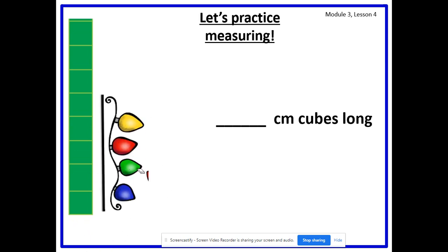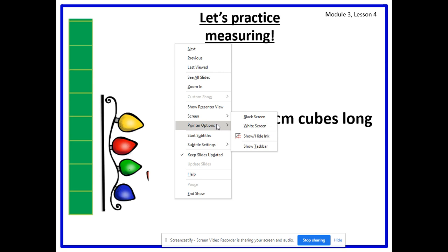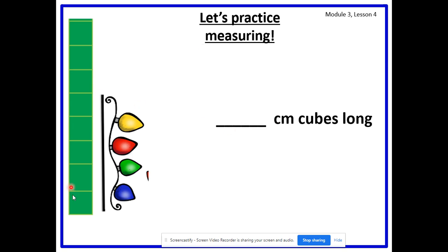Now we're going to measure these Christmas lights. There's no gaps, there's no overlaps. We align the endpoints by making sure we stop counting right here. Let's count: 1, 2, 3, 4, 5 centimeter cubes long. How long are these Christmas lights? 5 centimeter cubes long. Great job.